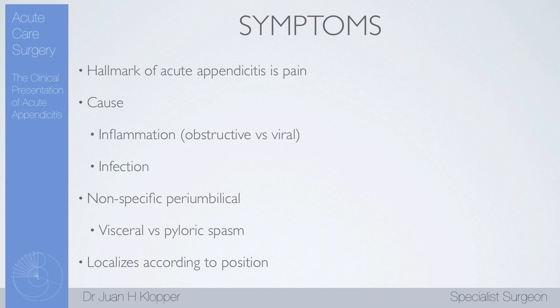Some patients have an appendix way down into the pelvis, which can cause its own problems. In any event, the parietal peritoneum, with its somatic nerve supply, will cause the pain to be localized in a certain spot. We can use this localization of the pain to help us in making the diagnosis of acute appendicitis.